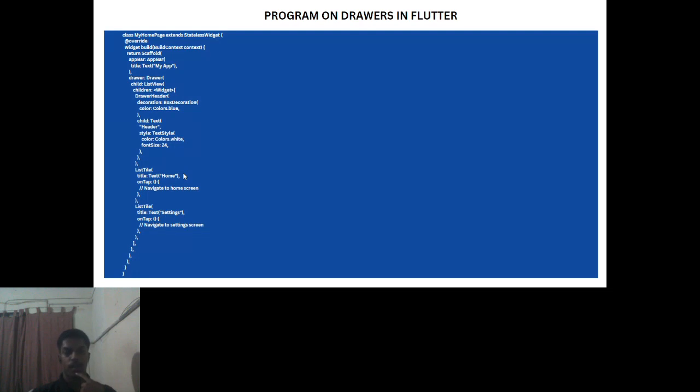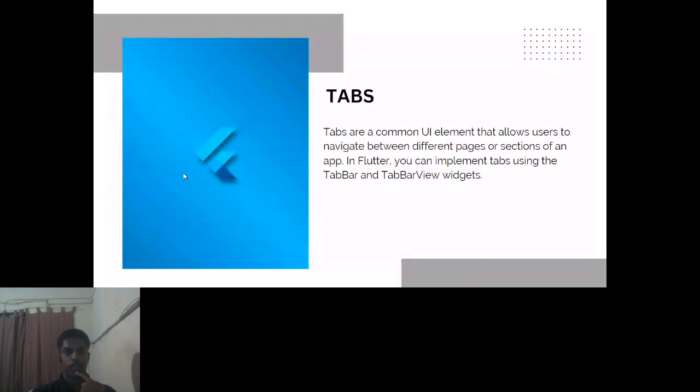Here's a demo program for drawers in Flutter. The class MyHomePage extends StatelessWidget. An app title is set as 'My App', a drawer is created with a blue background color, a header text in white with font size 24, and it's linked to the home page so you can see the navigation menu icon on your home page.